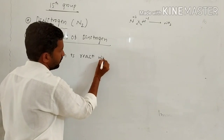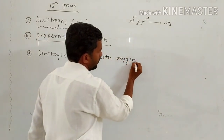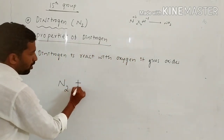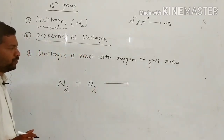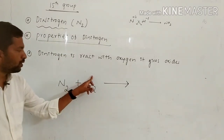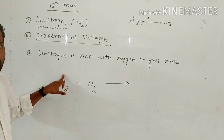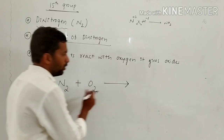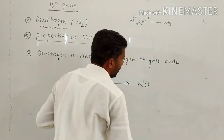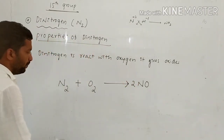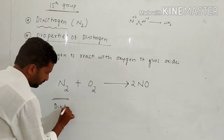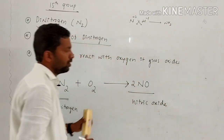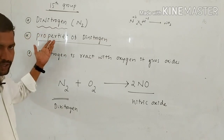Di-nitrogen reacts with oxygen to give oxides — specifically nitric oxide (NO). Di-nitrogen combined with oxygen gives nitric oxide. This is the fourth property of di-nitrogen. These are the preparations and properties of di-nitrogen.